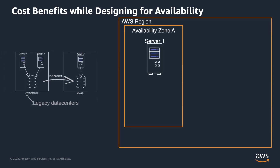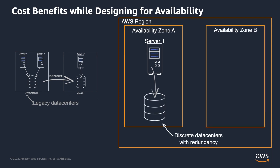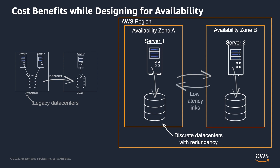You simply create two EC2 instances and put them into two different availability zones. Availability zones consist of one or more discrete data centers with redundant power, networking, and connectivity within an AWS region. Availability zones also have low latency links between them, making it possible for you to spread your server clusters between them for high availability. Not only do you need fewer servers for availability, it also costs you nothing extra to leverage multiple availability zones.